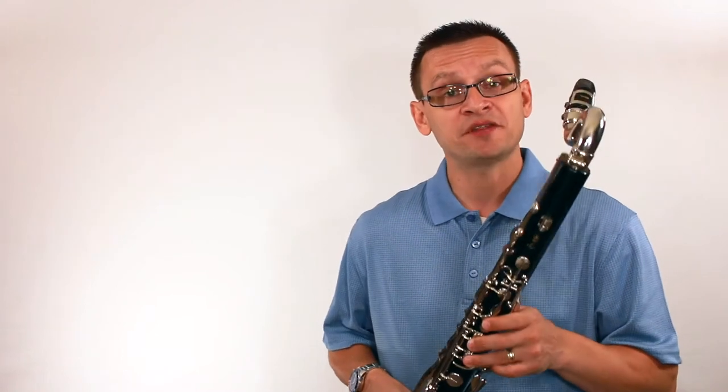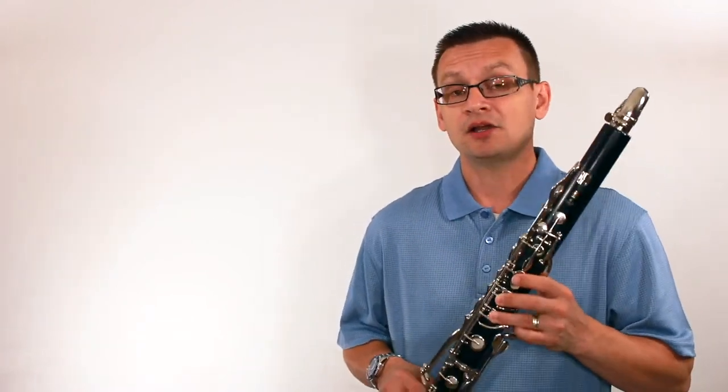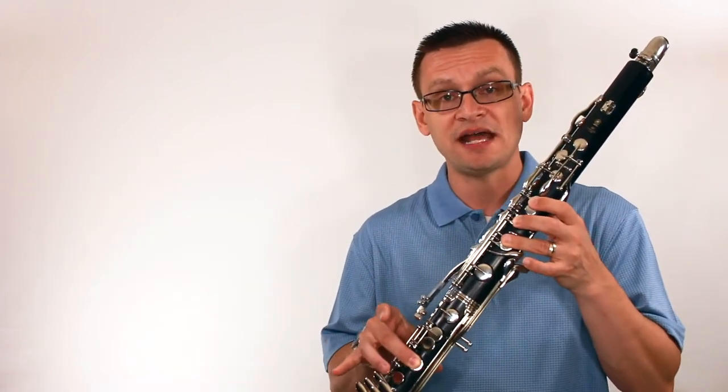Let's review the names and some of the fingerings of the notes that we're going to need for concert A minor. Concert A minor begins with a note B natural for our bass clarinet. Our second finger on our right hand will help us get that B natural fingering.